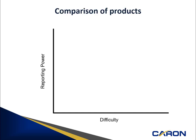If we look at the difficulty of the products compared to their abilities, you'll notice that GL Financial Reporter is not very difficult to learn, but it is limited in its reporting power. Crystal is more difficult to learn, but it is much more robust in its reporting abilities compared to the GL Financial Reporter. Sage 300 Intelligence is slightly more difficult than GL Financial Reporter, just because there is more reporting ability and more things to learn, but not that difficult — and it is much more powerful than the other two tools.